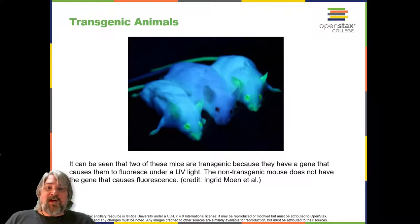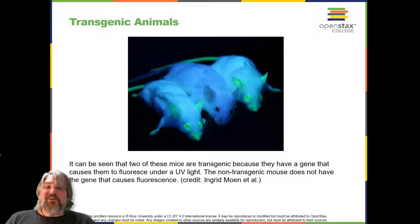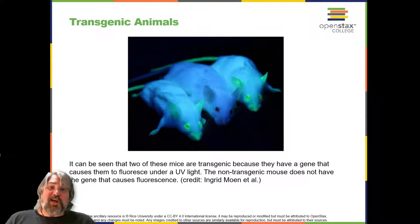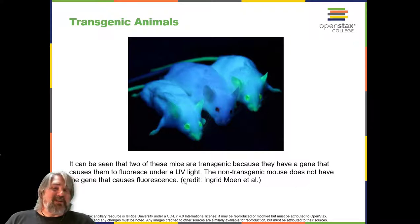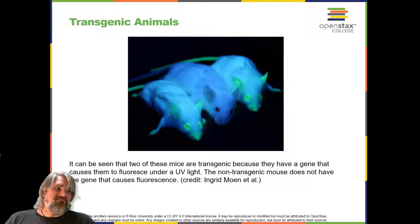Transgenic animals. Although several recombinant proteins used in medicine are successfully produced in bacteria, some proteins need a eukaryotic animal host for proper processing. For this reason, genes have been cloned and expressed in animals such as sheep, goats, chickens, and mice. Animals modified to express recombinant DNA are called transgenic animals. In this picture, two transgenic mice have the gene that causes them to fluoresce under UV light, most likely originally from jellyfish. The non-transgenic mouse does not have the gene and therefore does not fluoresce.